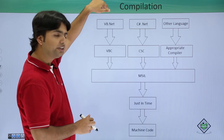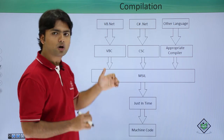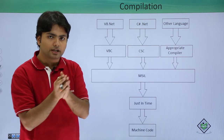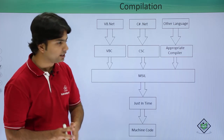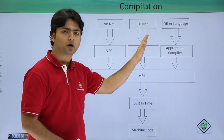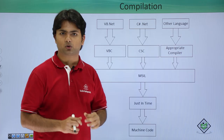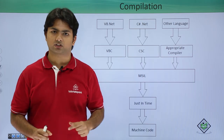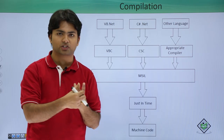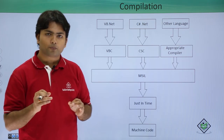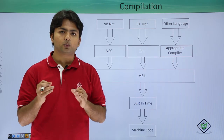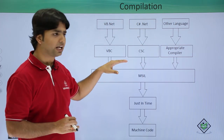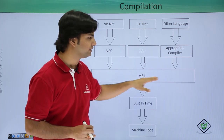If I have code written in VB.NET, I will require a compiler to compile that VB.NET code to intermediate code. Similarly, for C-Sharp I require a compiler for that particular language. Each compiler knows two languages: one is the source language and the second is the target language. In .NET Framework, the source language may be different but the target language will always be the same, that is MSIL.